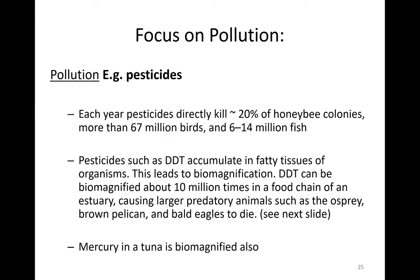This biomagnification causes larger predatory animals such as ospreys, brown pelicans, and bald eagles to die. Mercury in tuna is also biomagnified in the same way. Let's go over what biomagnification is.